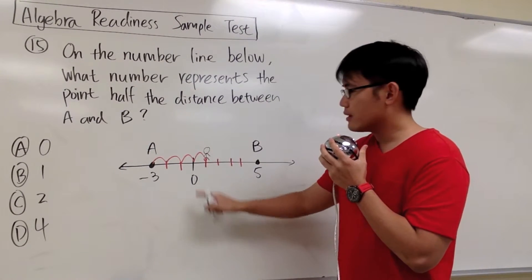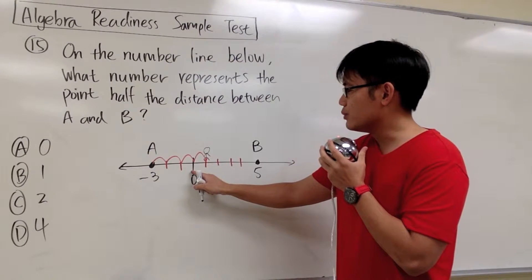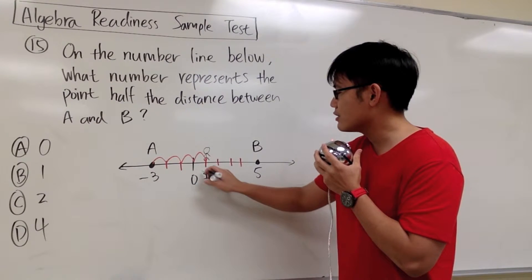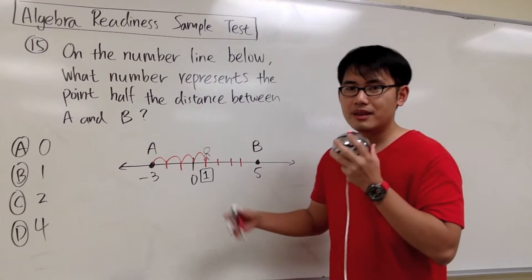And where's this point? This is 0, and I just need to move to the right one time. So this right here has to be the number 1.